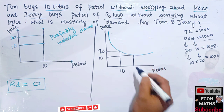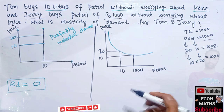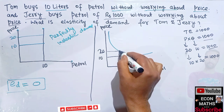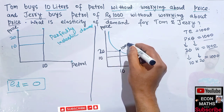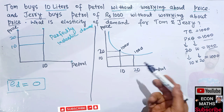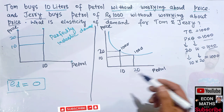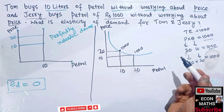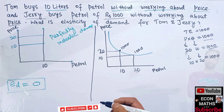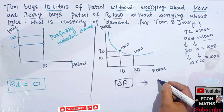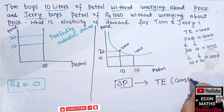So when price is 20, quantity is 50, and when price falls to 10, quantity rises to 100 — total expenditure stays at 1000 in both cases. We can see that 20 × 50 = 1000 and 10 × 100 = 1000. This means the proportionate decrease in price equals the proportionate increase in demand. When total expenditure remains constant with a change in price, we say we have unitary elastic demand.